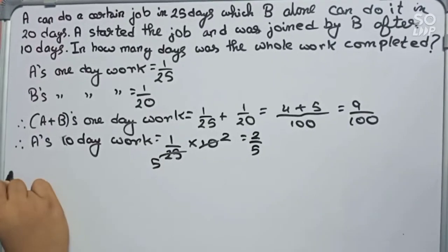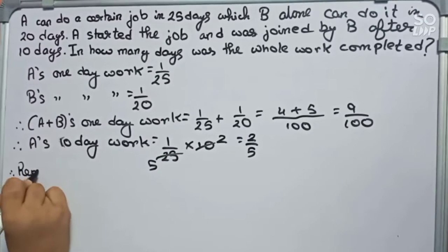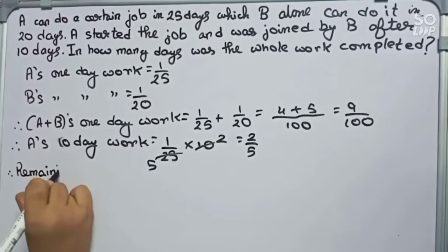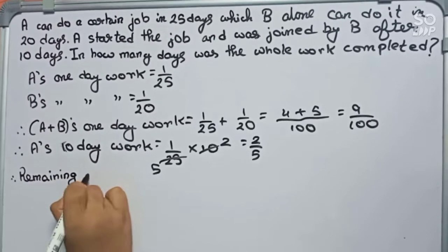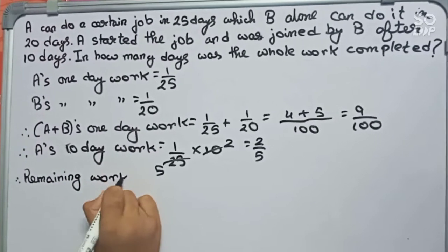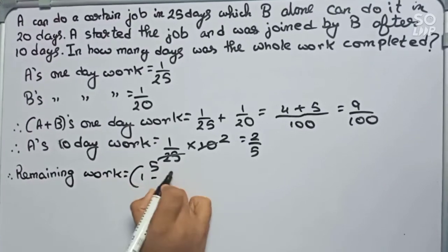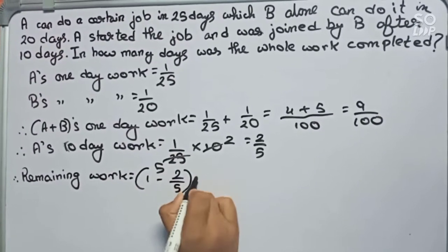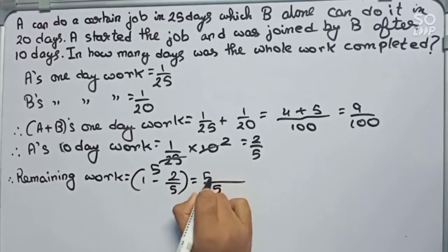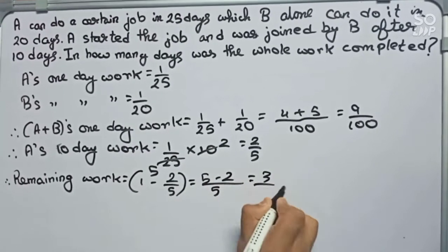Now we will find the remaining work. The remaining work equals 1 minus 2 by 5, which will become 5 minus 2, which is 3 by 5.